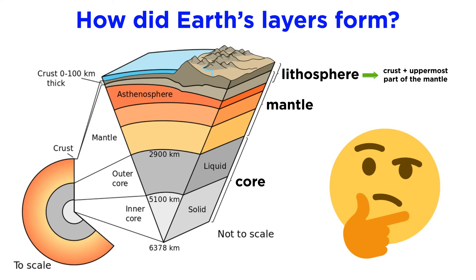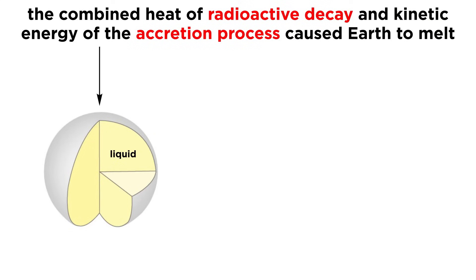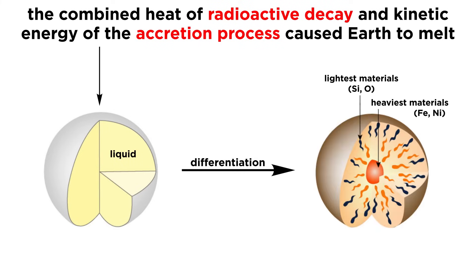Now that we know all about Earth's layers, let's discuss how they formed. When Earth first accreted, it was an extremely hot, homogeneous planet, since the material present was primarily chondrite meteorites. At some point early in its history, the combined heat of radioactive decay and kinetic energy of the accretion process caused Earth to melt. The process of differentiation was then able to begin, with the heaviest materials like iron and nickel sinking toward the center of the Earth, and the lightest materials like silicon and oxygen rising toward the surface.